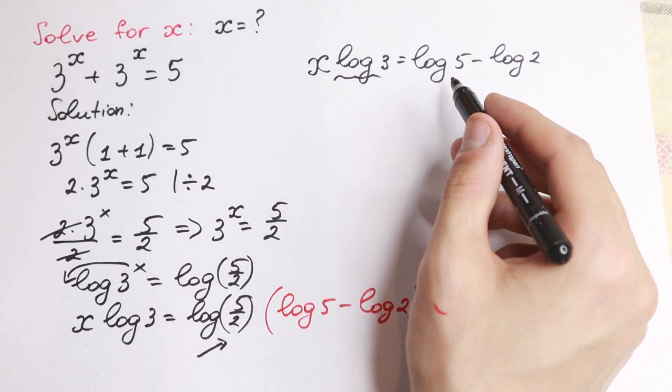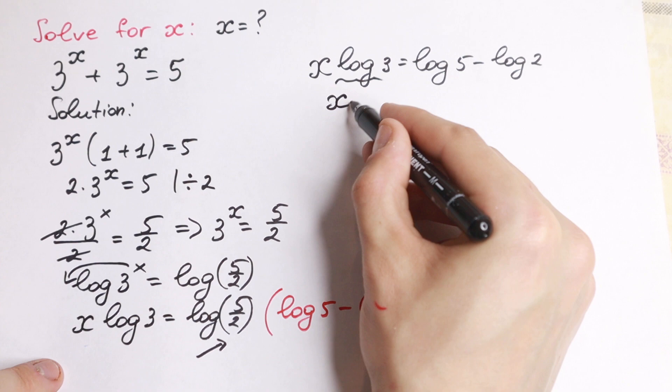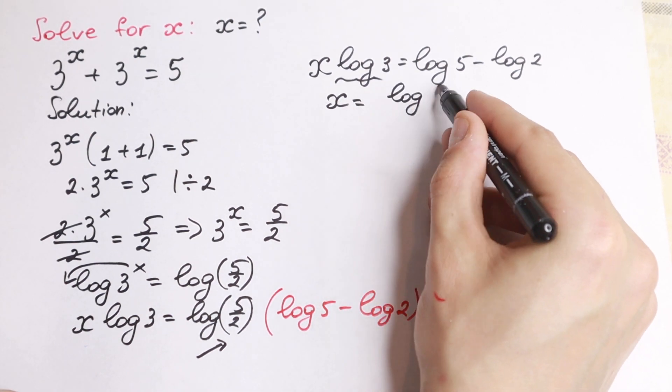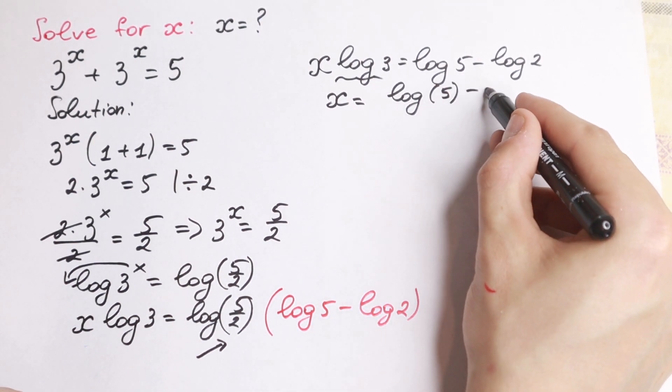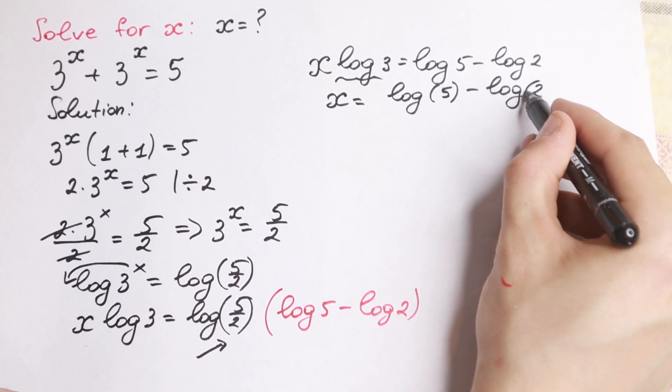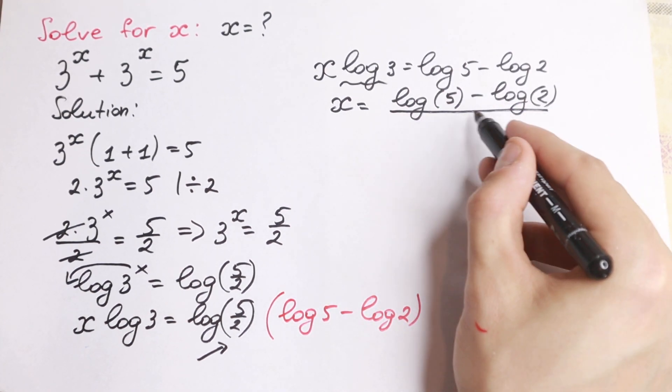So if we divide it, we will have that our x is equal to log 5 minus log 2, all over log 3.